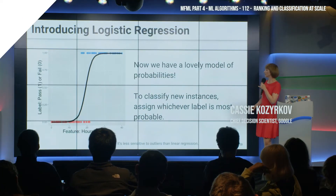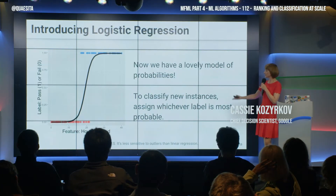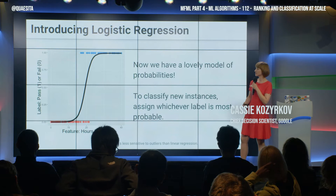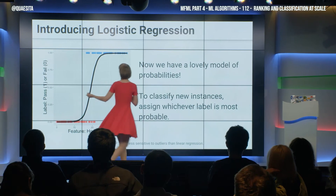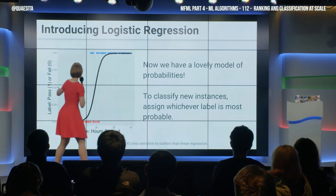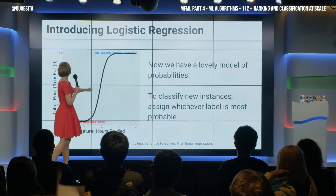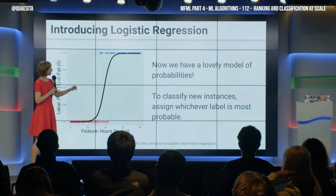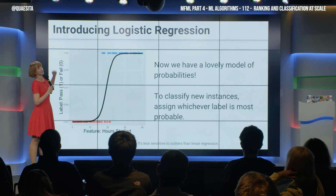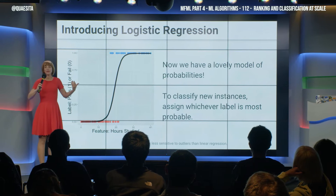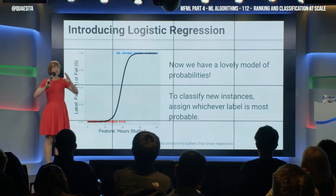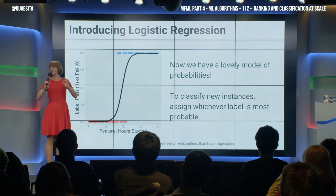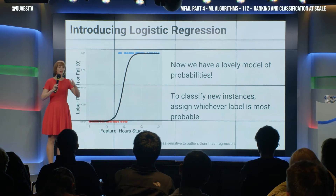This is more like a model of probabilities, and to classify new instances, either we can simply assign whichever label is more likely. So if it outputs 0.55, I will call it a pass — or I can say 0.55 means you don't know what you're talking about, model. Let's call that the 'I'm not sure' zone and actually ask a human for their opinion.